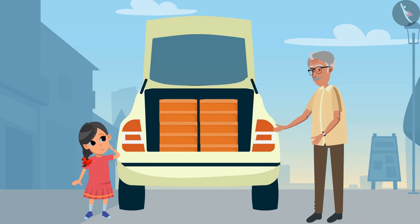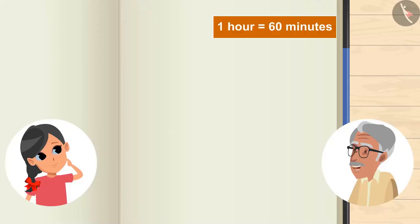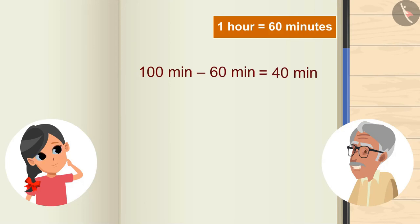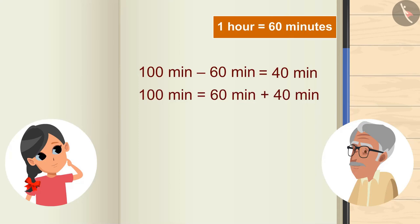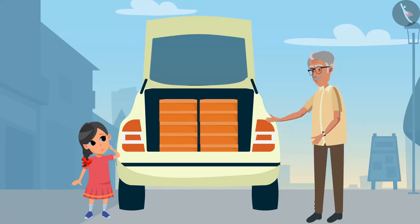No, Grandpa. Well, let me tell you. 1 hour has 60 minutes. So if we subtract 60 from 100 minutes, we will be left with 40 minutes. We can also say: if we add 60 and 40 minutes together, we will get 100 minutes. So now, Goody, 100 minutes means 1 hour and 40 minutes.